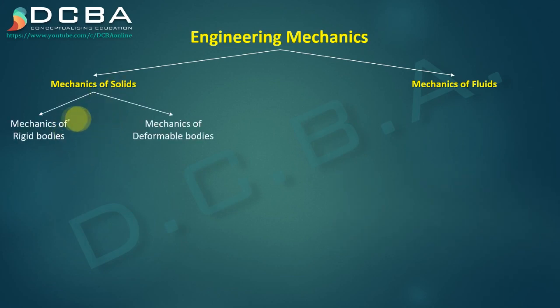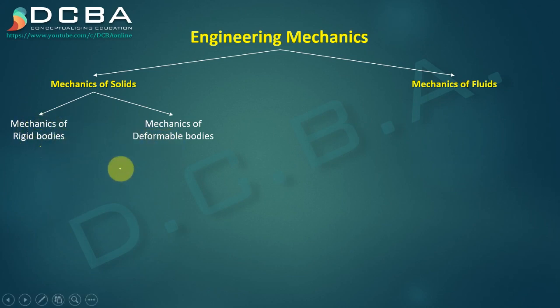Mechanics of solids is further subdivided into mechanics of rigid bodies and mechanics of deformable bodies. A deformable body is one that changes its shape when a force is applied — like clay, which does not retain its shape when you press it. That is a deformable body.